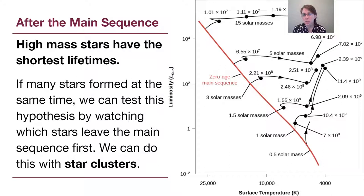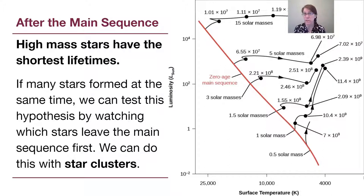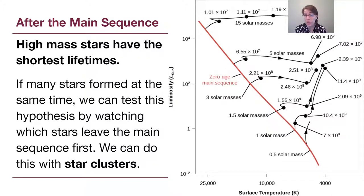All of these numbers are mostly from computer simulations, so we want to remember that science is about having a hypothesis and testing it. If we had a whole bunch of stars that all formed at the same time, we can test this hypothesis by watching which stars leave the main sequence first. We can do this using star clusters.